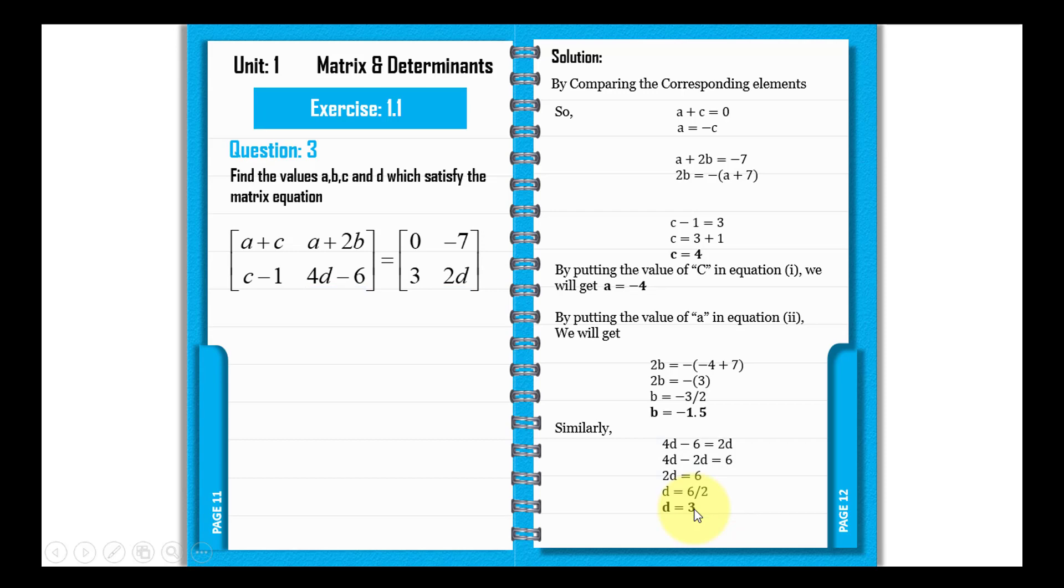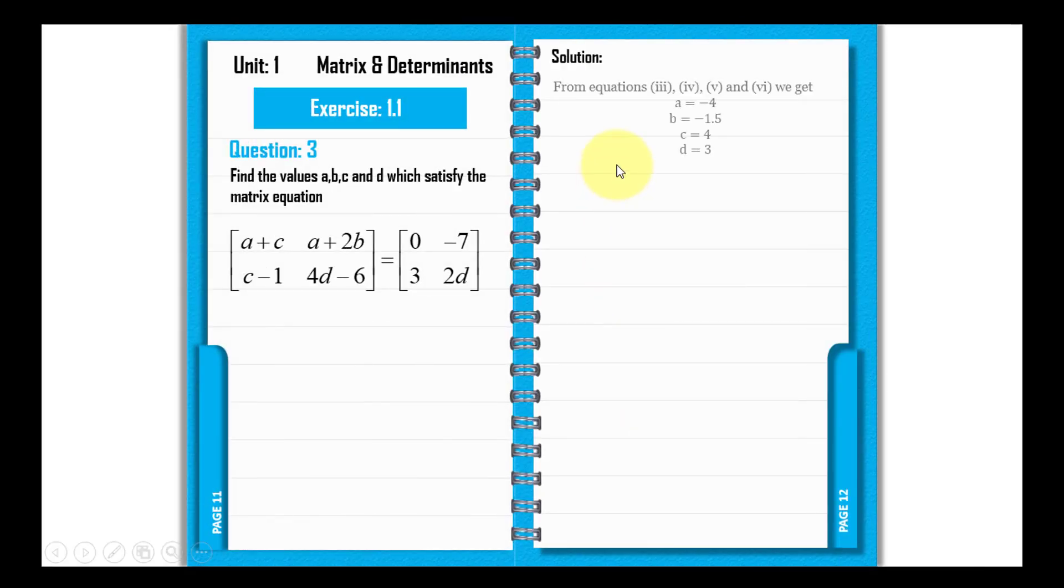So these are all the values. From equations 3, 4, 5, and 6, we get a equals minus 4, b equals minus 1.5, c equals 4, and d equals 3.